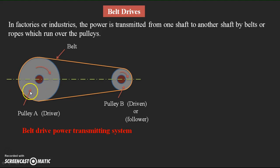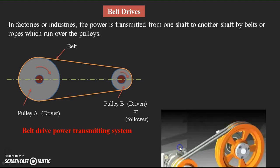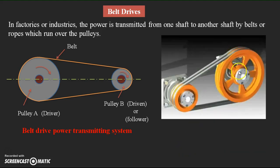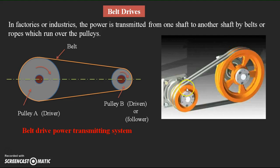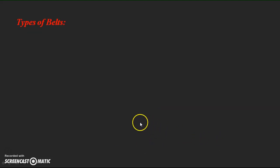Practically, we can see an arrangement like this — two pulleys, a larger and a smaller one. From the larger pulley the power is transmitted to the smaller one. The larger pulley, pulley A, is connected to the motor. When it starts rotating, the smaller one also starts rotating — so this becomes the driver and the smaller one becomes the driven or follower. That is the belt drive system used to transmit power from one shaft to another in the form of rotary motion.